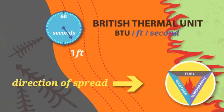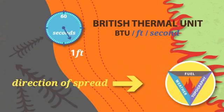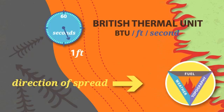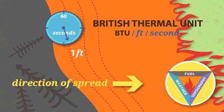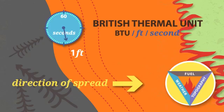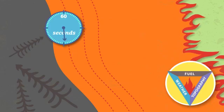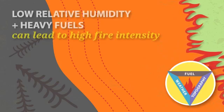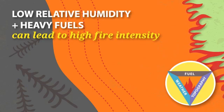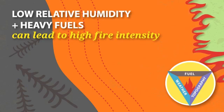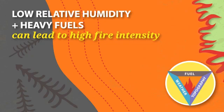Again, all legs of the fire environment triangle can influence fire intensity. For example, low relative humidity and heavy fuels can lead to high fire intensity.